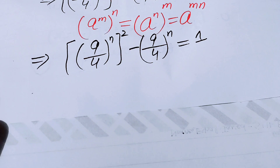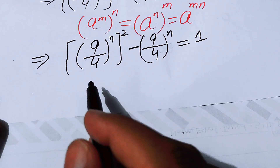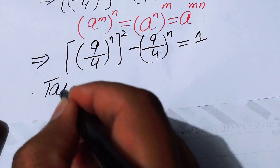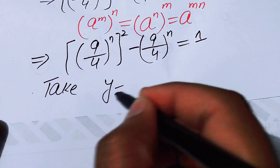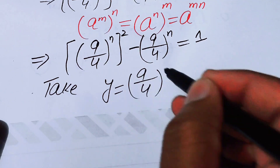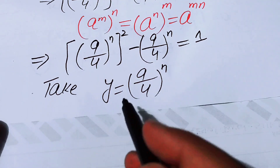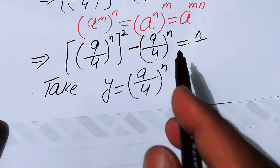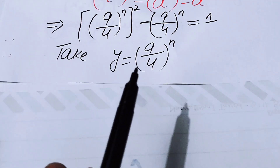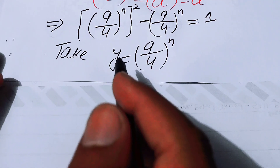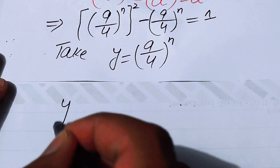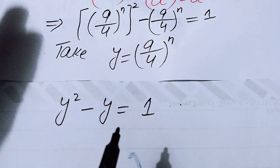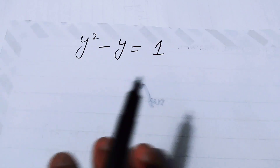Now we convert this exponential equation into quadratic form. We let y equal (9/4)^n, so the expression is rewritten as y² minus y equals 1, giving us a quadratic equation.